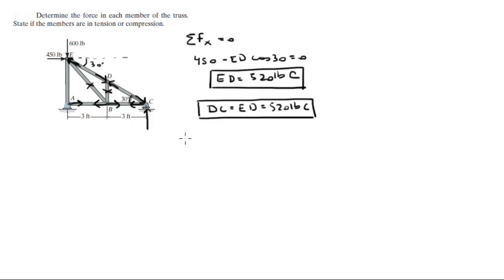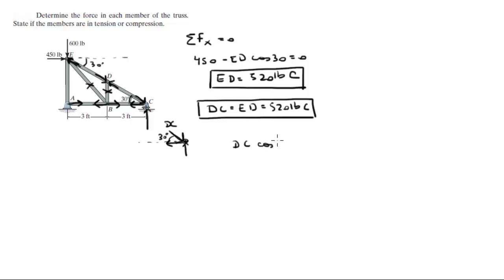At joint C, we have a force going this way, which is DC, at an angle of 30 degrees. We have a reaction and we got a force going that way. So DC cosine of 30 minus BC is equal to 0, which would make BC equal to 450 pounds. And as you can see, that is in tension.